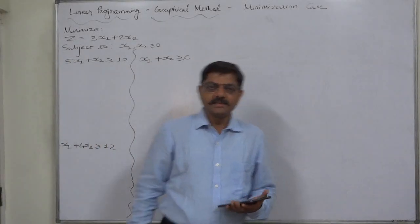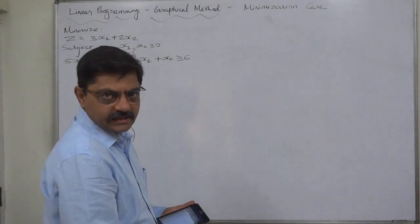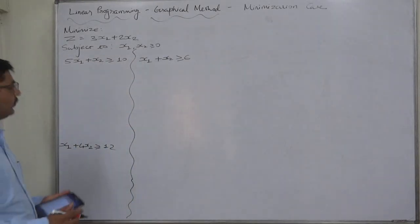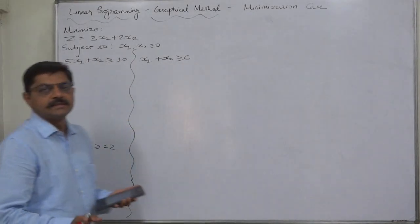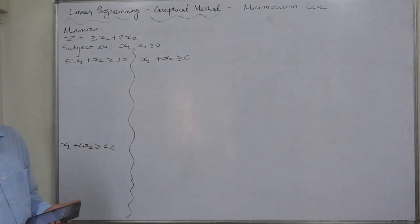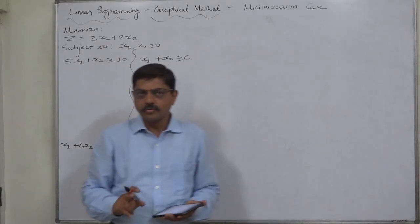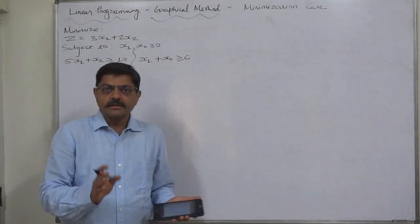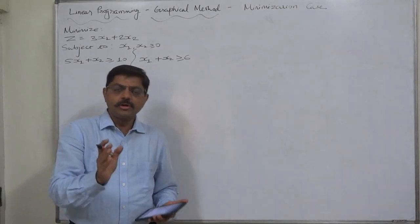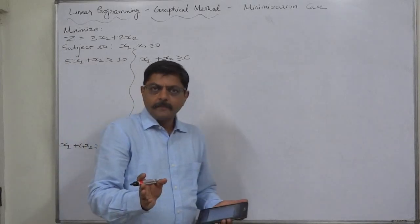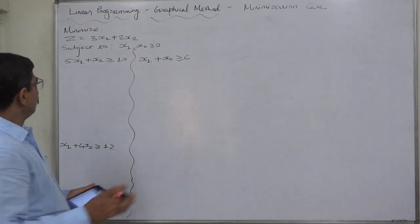Hello and welcome. A new case in linear programming solution by graphical method. This time we are going to discuss a case with greater than or equal to sign. Previously we discussed a few cases with less than or equal to sign. Now it is the turn of the case having constraints with greater than or equal to sign. Generally this matches with the minimization objective, but it is not compulsory — sometimes greater than or equal to sign can appear in maximization and less than or equal to sign in minimization.